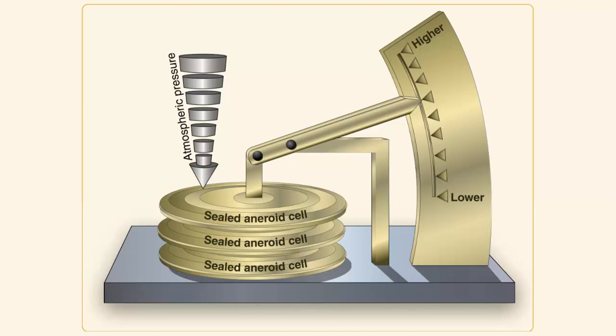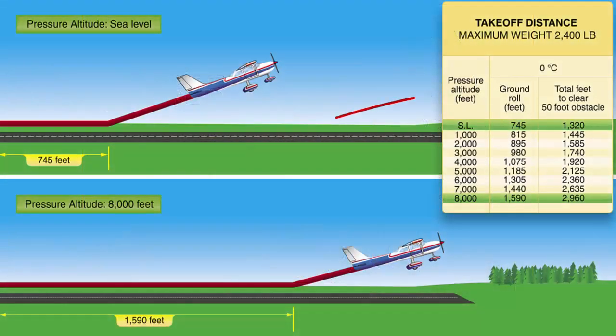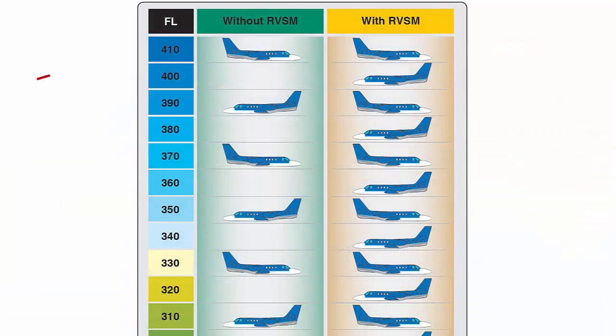As atmospheric pressure changes, the standard datum plane may be below, at, or above sea level. Pressure altitude is important as a basis for determining airplane performance, as well as for assigning flight levels to airplanes operating at or above 18,000 feet.